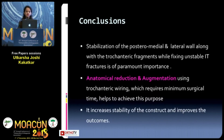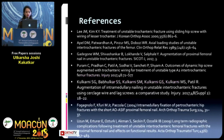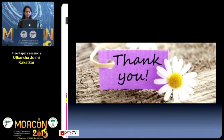To conclude, stabilization of the posterior medial and lateral wall along with the fragments while fixing unstable IT fractures is of paramount importance. Anatomical reduction and augmentation using trochanteric wiring, which requires minimal surgical time, helps achieve this purpose. It increases the stability of the construct and improves the outcomes. Thank you.